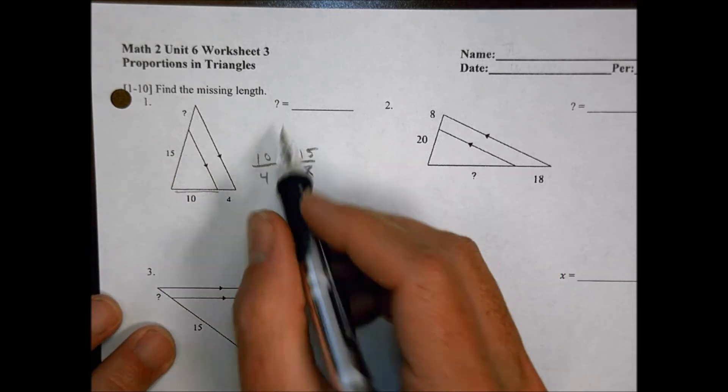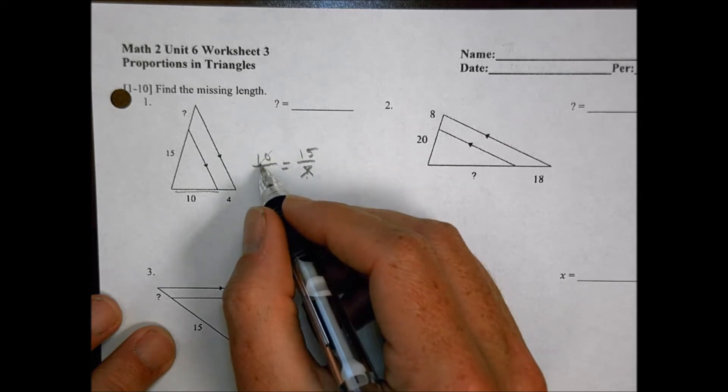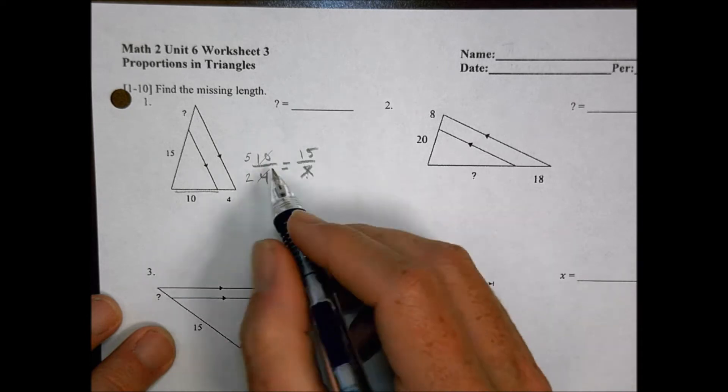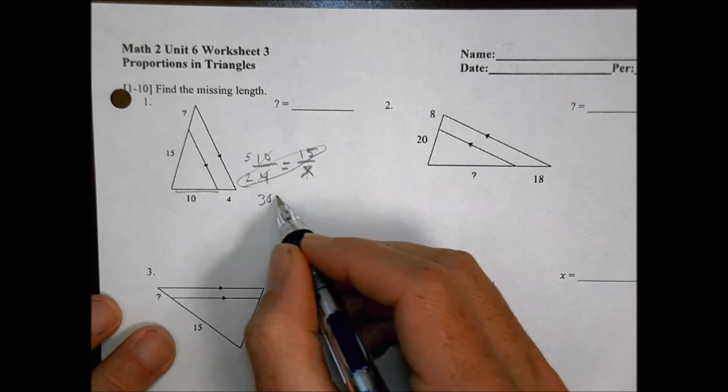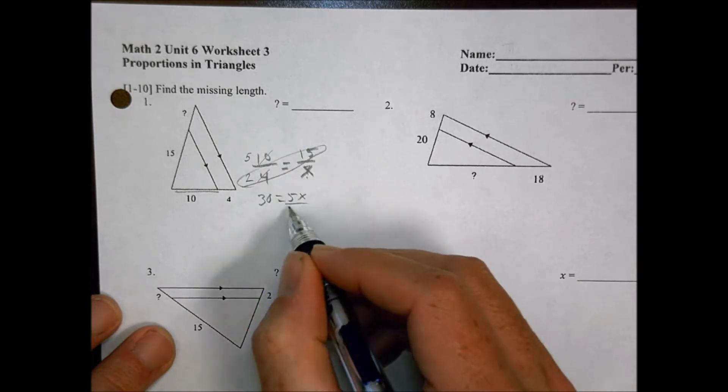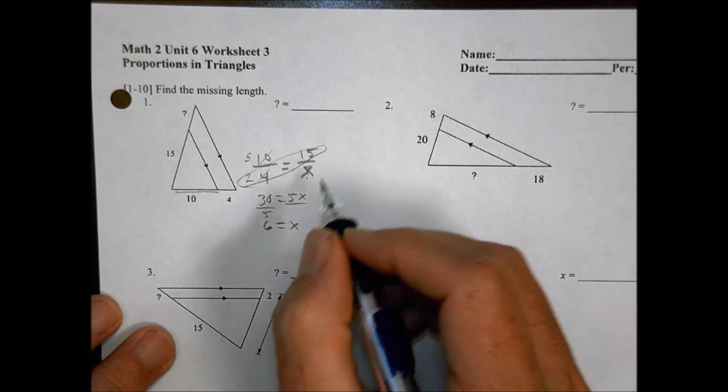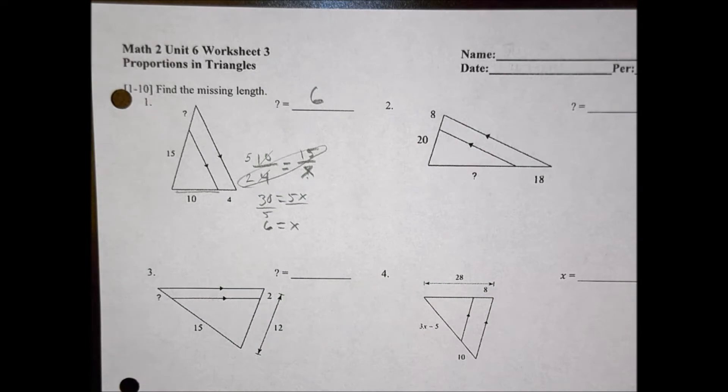We can reduce first if it helps make it a little bit easier. 2 goes in here 5 times and 2 goes in here 2 times, and then we cross multiply, and we have 30 equals 5x. Divide both sides by 5, and so that x equals 6. That's our first answer for number 1.